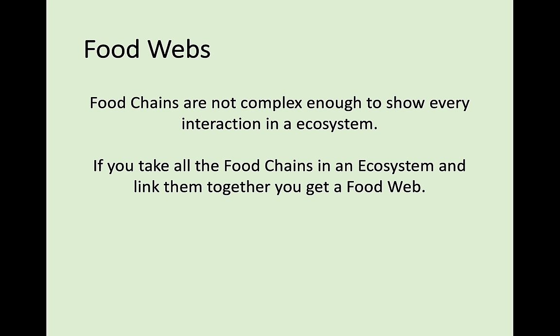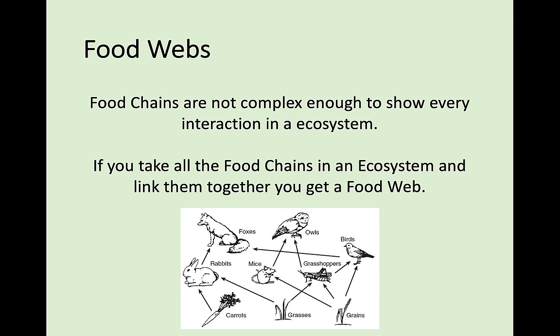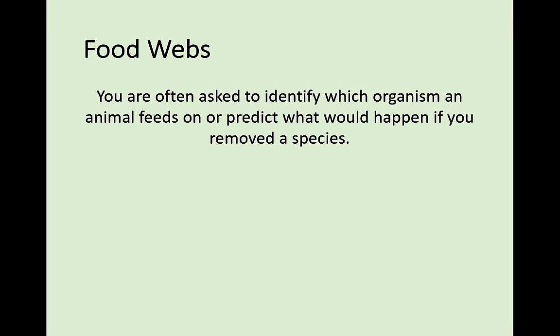Food chains are fairly simple, and because of that they are not complex enough to show every feeding interaction in an ecosystem. To do that, we take all the different food chains and put them together into something called a food web — basically a bunch of food chains all working together. You'll often be asked what happens if you remove one species from the food web and what impact that would have.